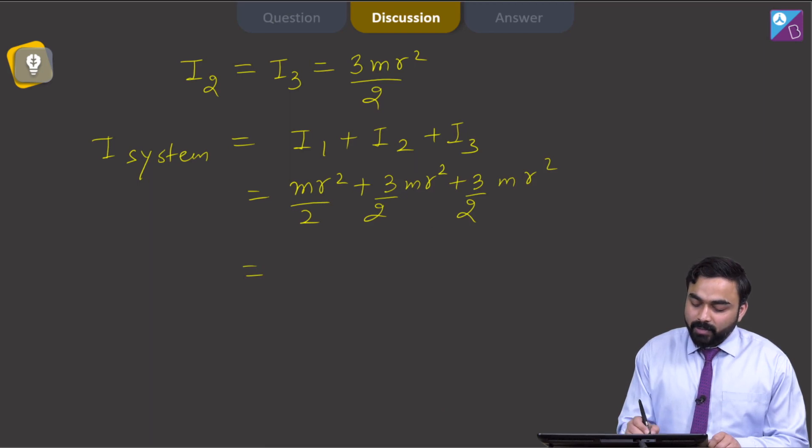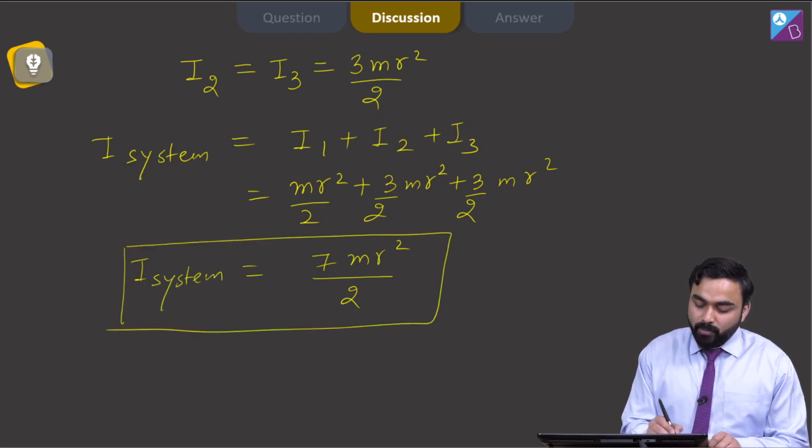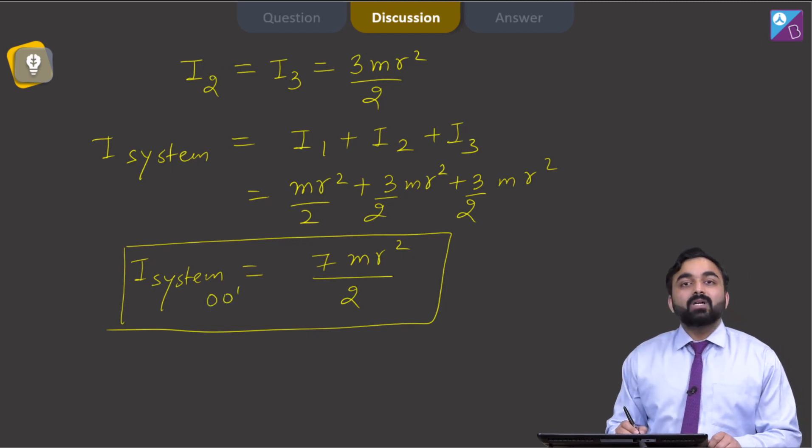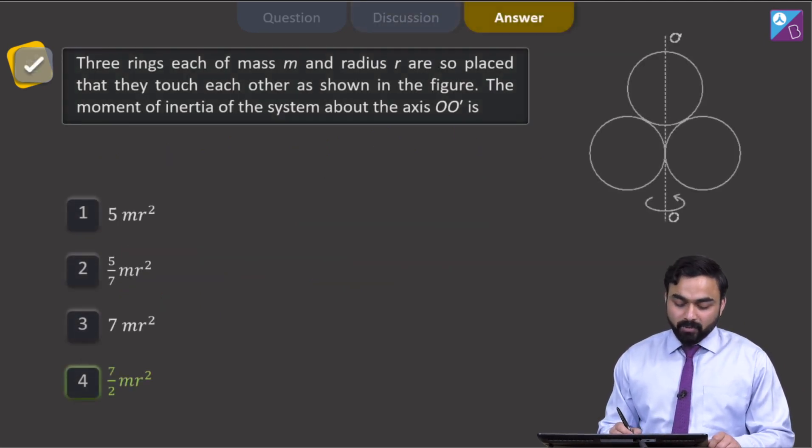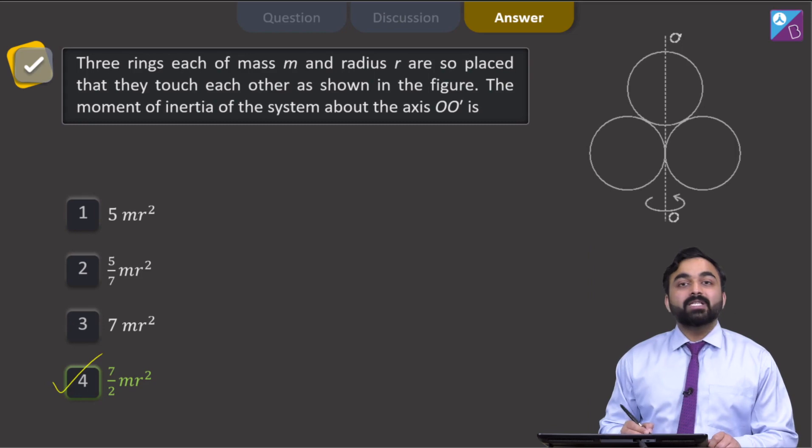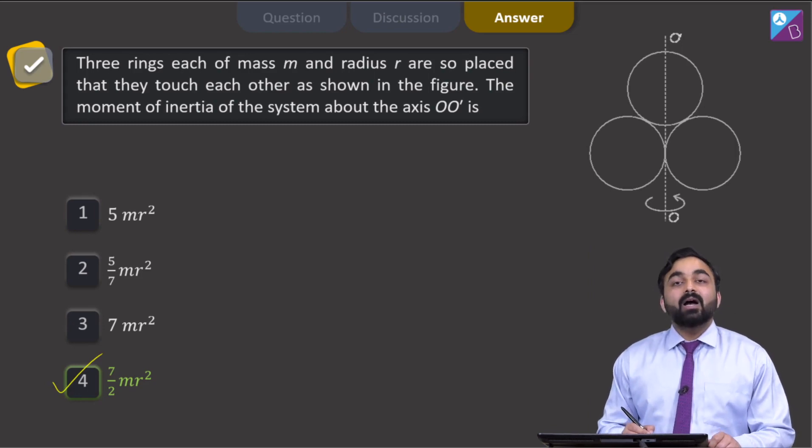This will be 7mr²/2. So, the moment of inertia of the system about axis OO' is 7mr²/2. Let us check the solution. Option number 4 is the correct answer. I hope this is clear to all of you. Thank you.